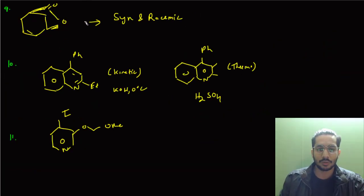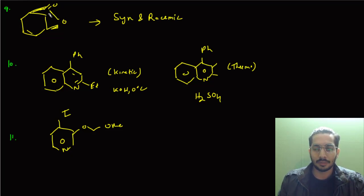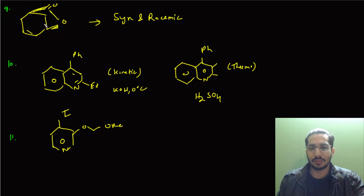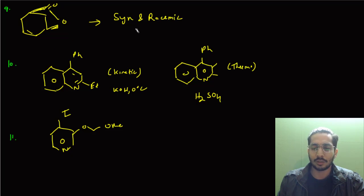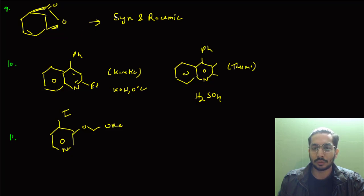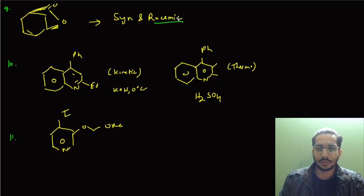The ninth question involved a lactone — a specific enantiomer was given — and then some reagent was given and ring opening of the lactone was taking place. They asked what kind of stereochemistry would exist between the carboxylic group and the ester group. The answer was that they will be syn and the product will be racemic.